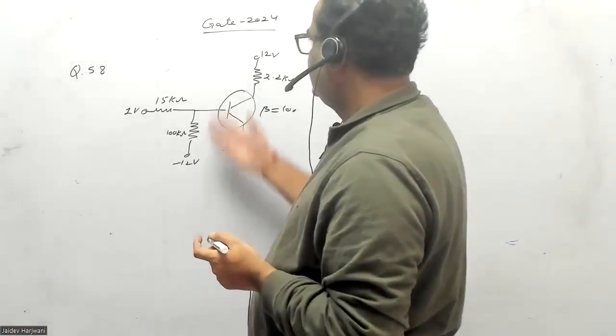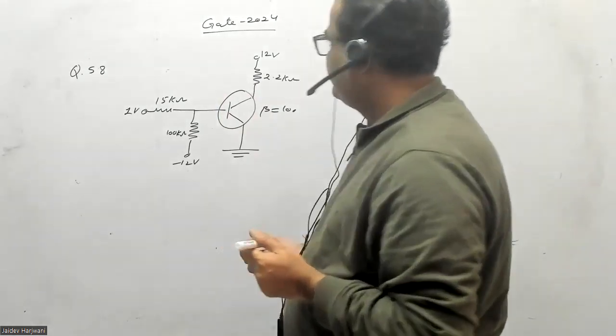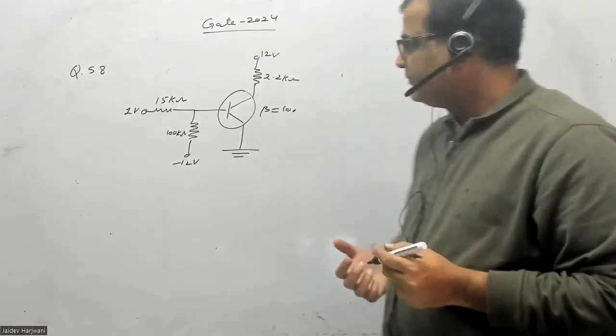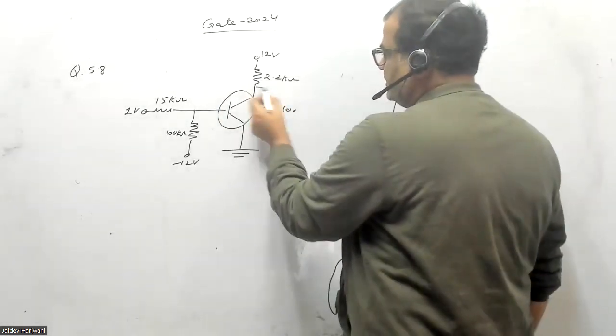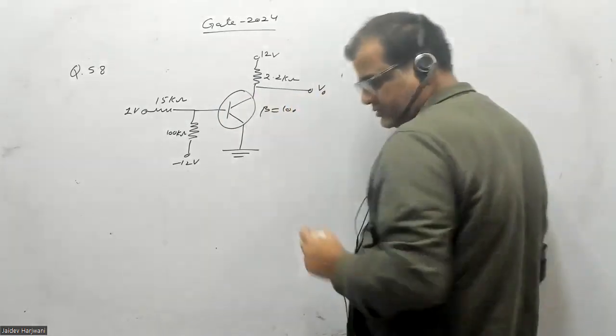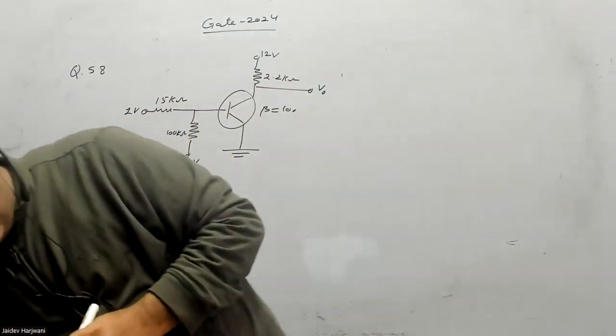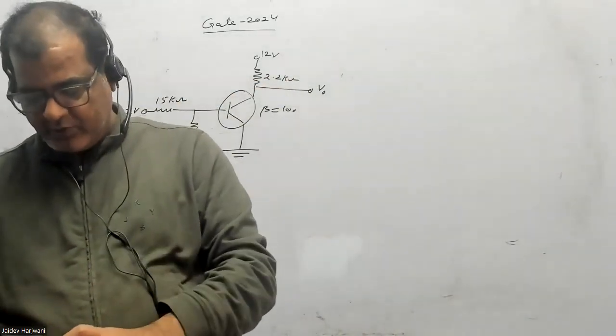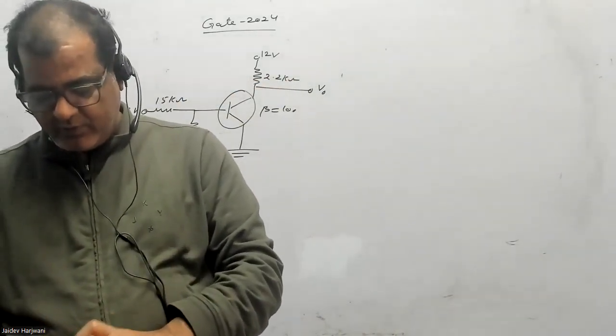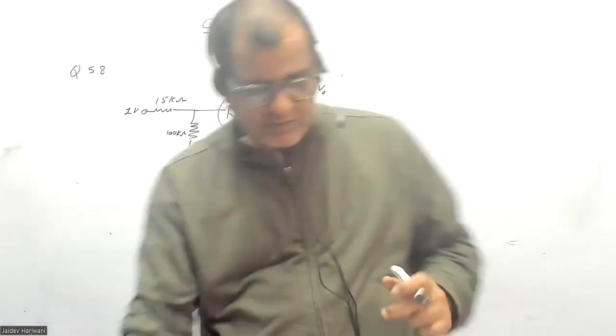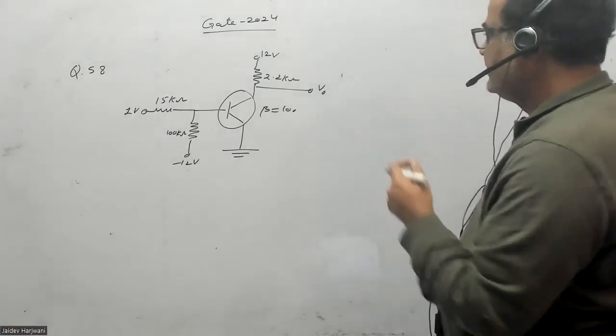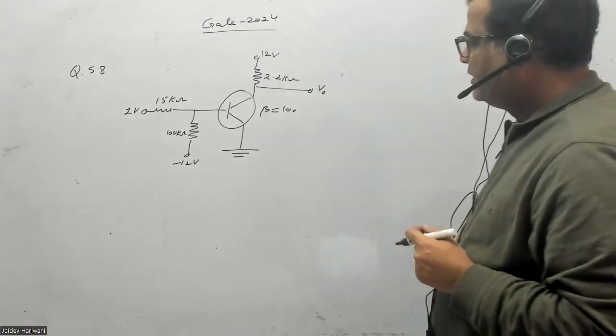Hello students, let us solve this transistor problem from GATE 2024 question paper. They're asking what is the V output in this question. In order to calculate V output, they also give you the beta value. The beta value given in the question is 100.